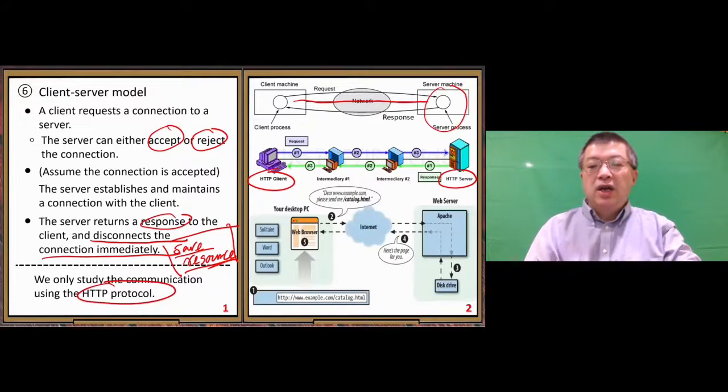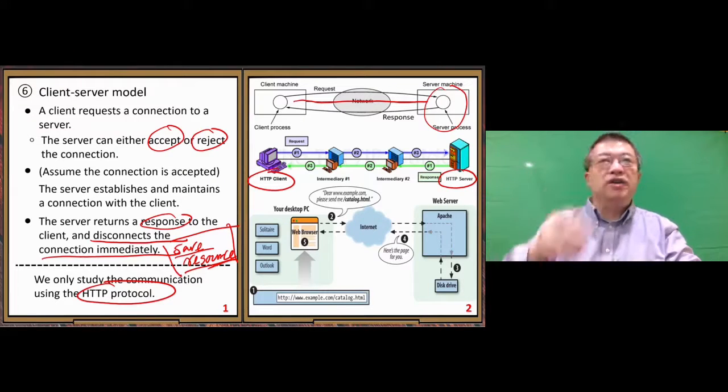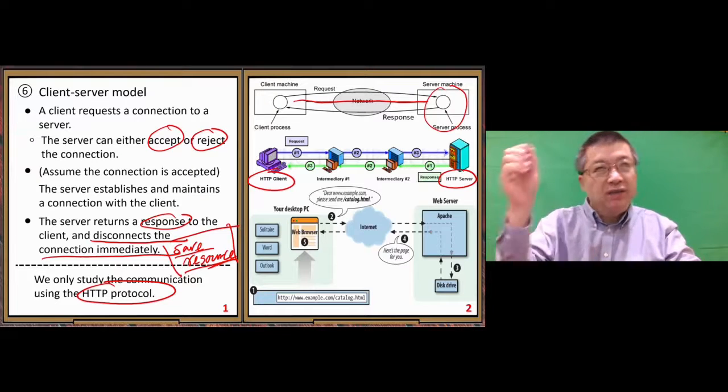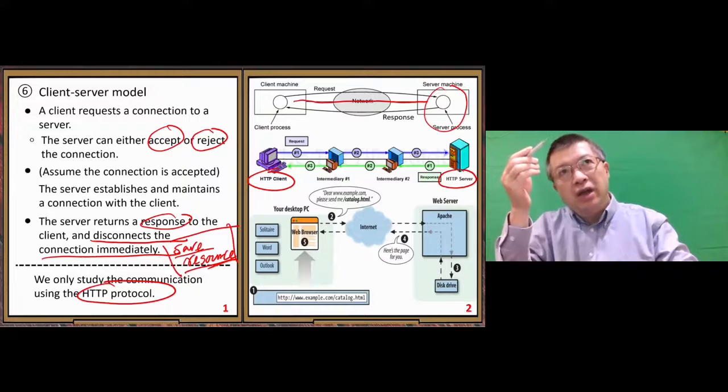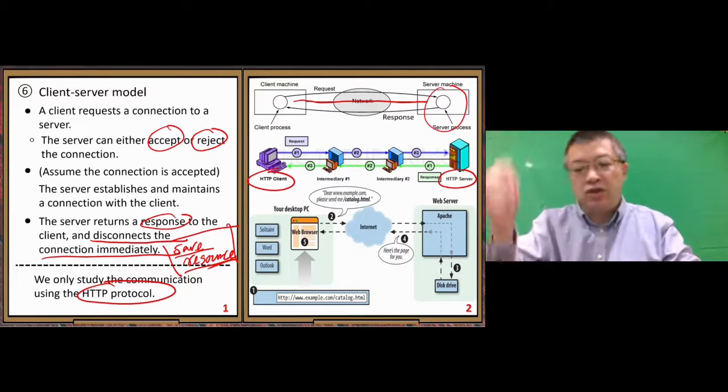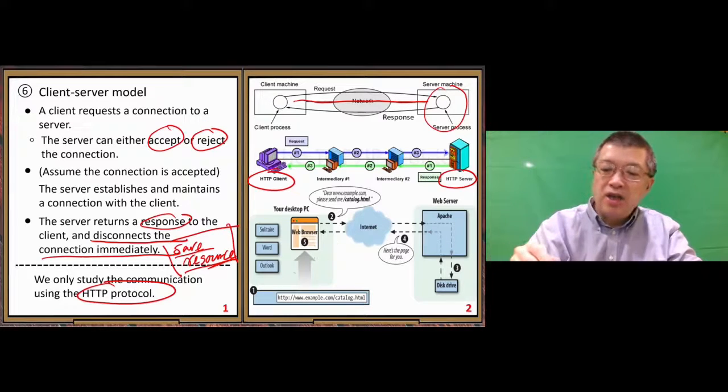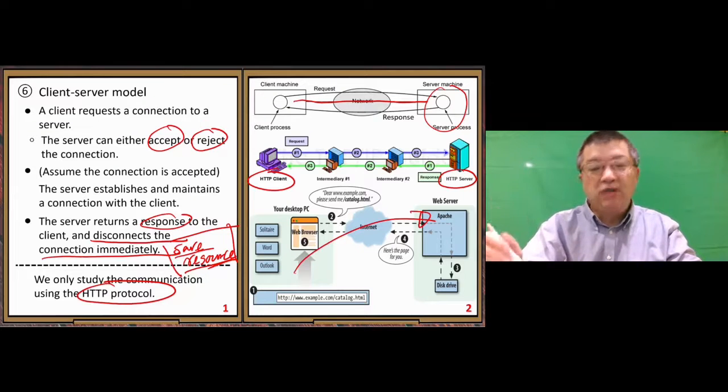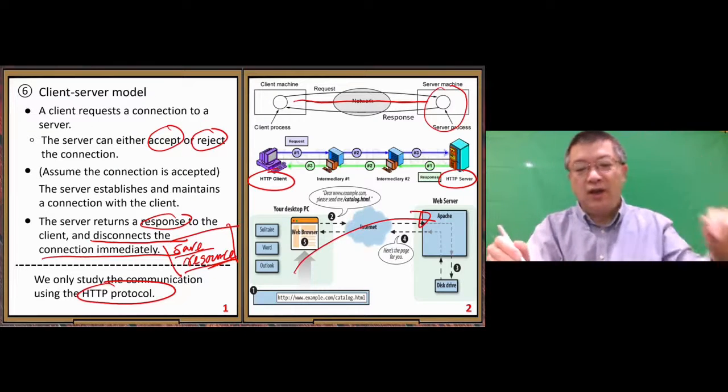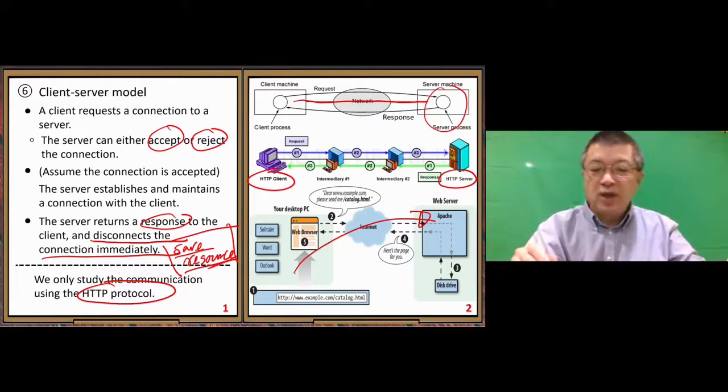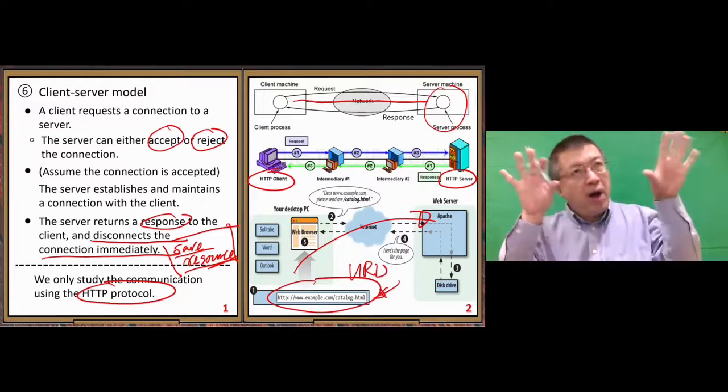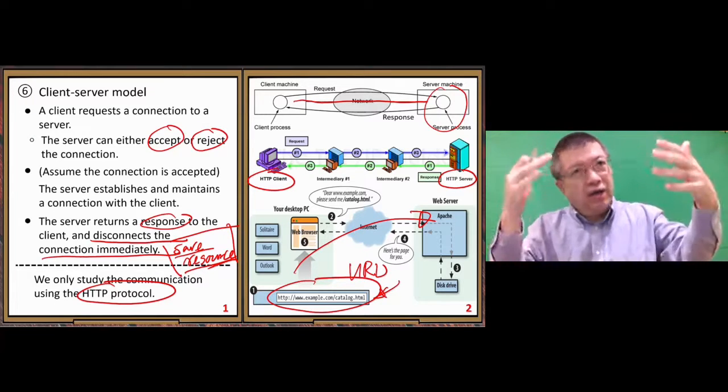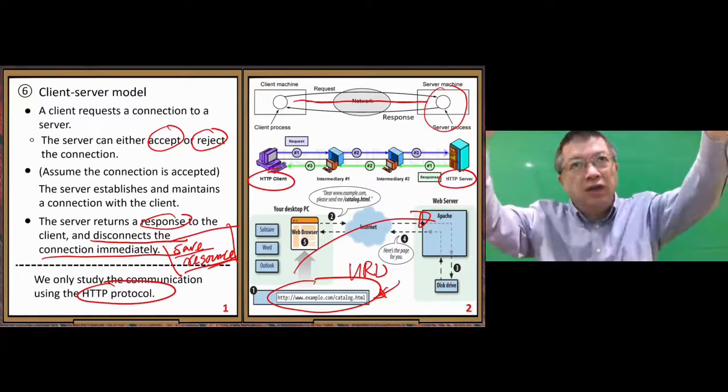So next, how do we find the server? We need an address. How do we send request to a server? The client needs to send a request to a server. The server has an address. Here you can see we use URL. We type URL in the web browser bar, enter, the request is sent to the server.